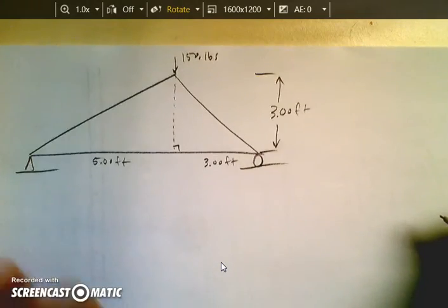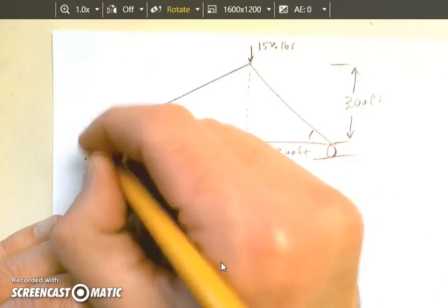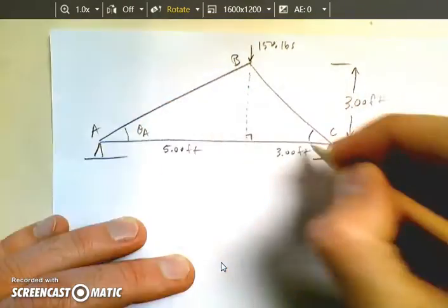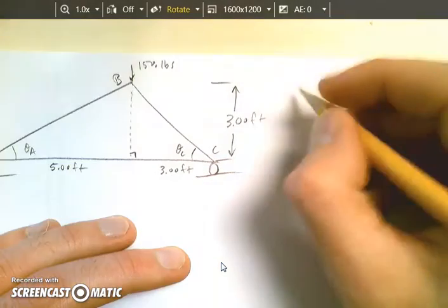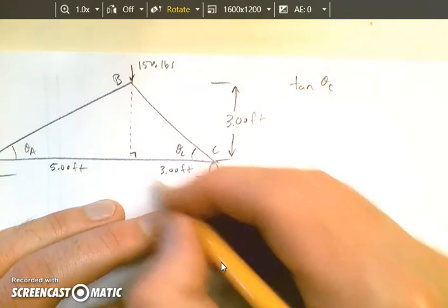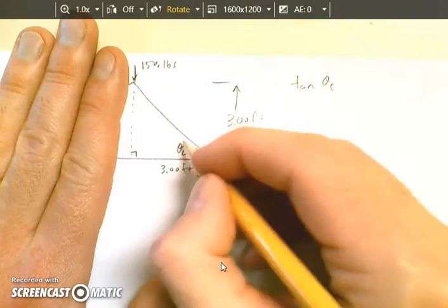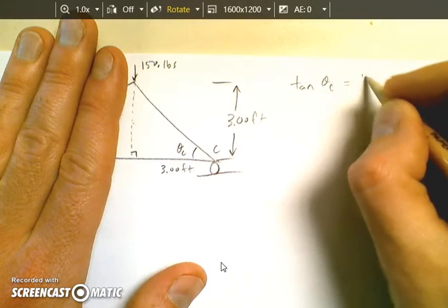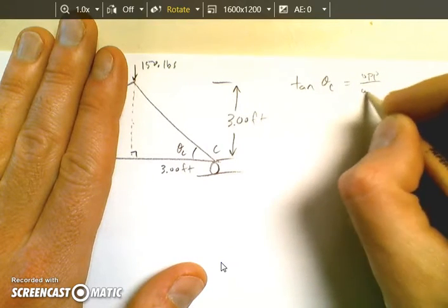The first step is we're going to find the angle measurements here and here. We're going to call this A, B, and C. This is theta A, theta C. So to find that, we're going to use the tangent. I'm going to start with theta C just because it's a little easier to see. Again, opposite and adjacent. So we're going to be using the tangent function with the opposite over the adjacent.